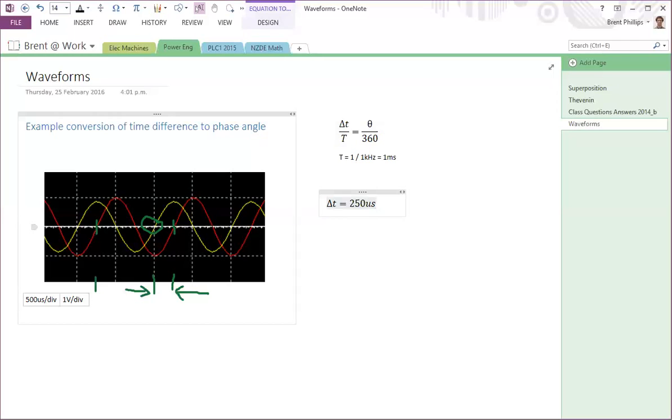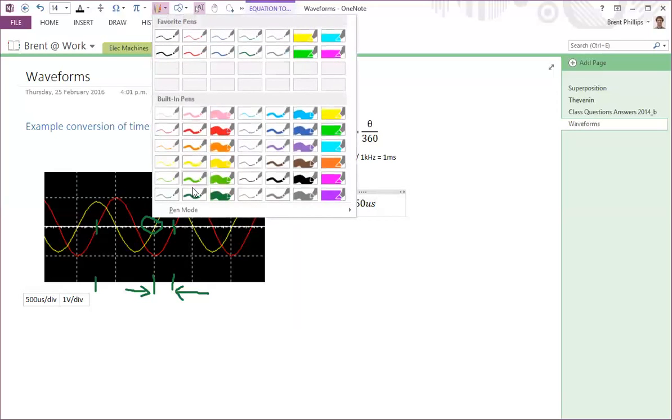But we need to know as well about the leading and lagging for these two waveforms. So if we're using yellow as our reference, I want to say does the red line lead or lag from the yellow one? Because I've got time flowing from the left to the right, I can just draw that in as well.